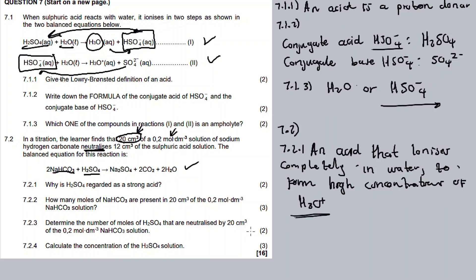To answer this question: a strong acid is an acid that ionizes completely in water to form high concentrations of hydronium ions. Acids form hydronium ions, while bases form hydroxide ions. So if asked about a strong base, you would reference hydroxide ions.